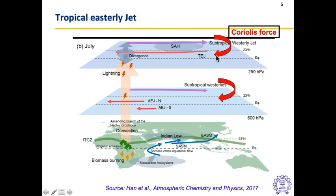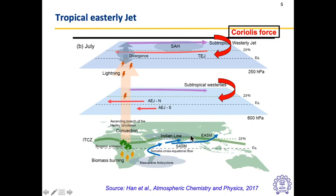The tropical easterly jet moves from east to west. Cloud movements above roughly 600 hPa to 250 hPa are pushed east to west, while low-level winds are pushed west to east during monsoon. Because of Tibetan plateau heating, the ITCZ moves northward — the ascending branch of the Hadley cell shifts to about 23°N near the Tibetan plateau. This ITCZ displacement is exactly what is needed to start the monsoon circulation and happens around late May or early June.